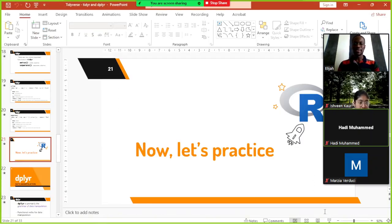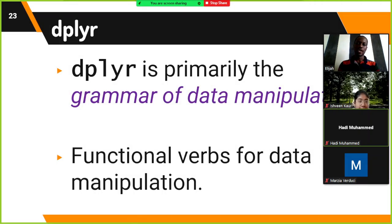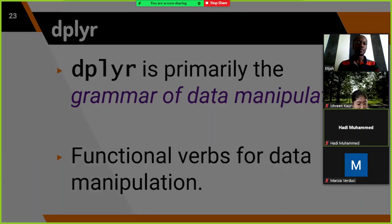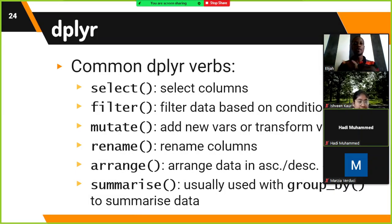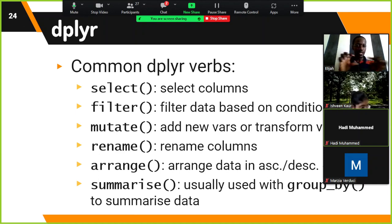Let's go back to the slides and continue. dplyr is primarily the grammar of data manipulation and contains functional verbs for data manipulation. The common dplyr verbs include: select (to select columns), filter (to filter data based on conditions), mutate (to add or transform variables), rename (to rename columns), arrange (to sort data ascending or descending), and summarize, which is usually used with group_by to summarize data.